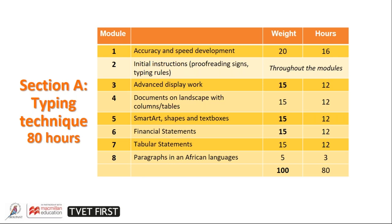Section A, the typing technique, has got eight different modules. We will look at the changes in the modules in more detail a little bit later. The sections have been linked to the subjects that teach the same sections in their curriculum. An example of this is specifically your advanced display work and documents on landscape with tables and columns — this can be linked to your Communication N6 syllabus. The financial statements have been linked to the CFS as well as the financial management course. The reason why we do financial statements is not everybody can actually afford the Pastel program, so it is very important for smaller businesses to have a PA that understands how to key in a financial statement.